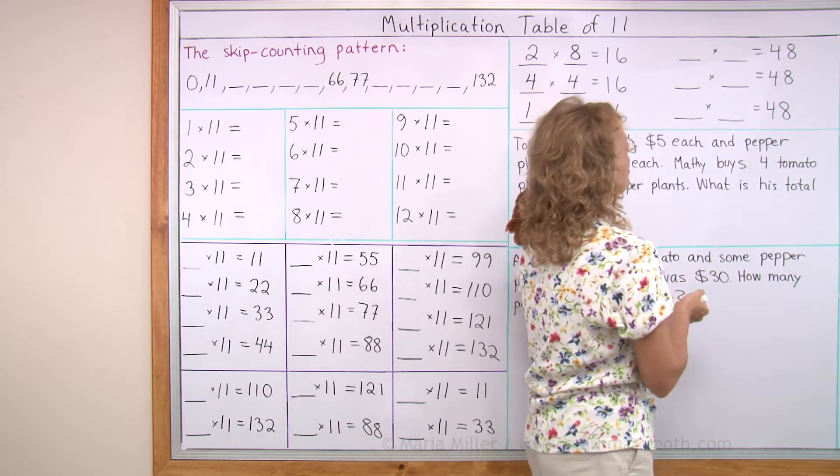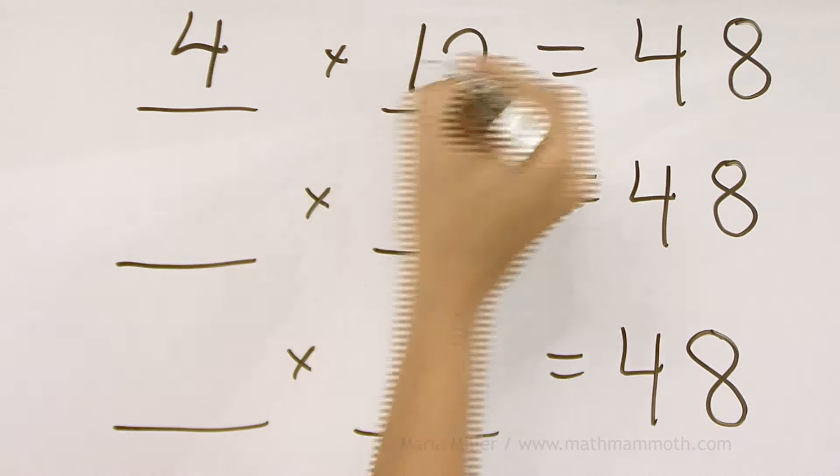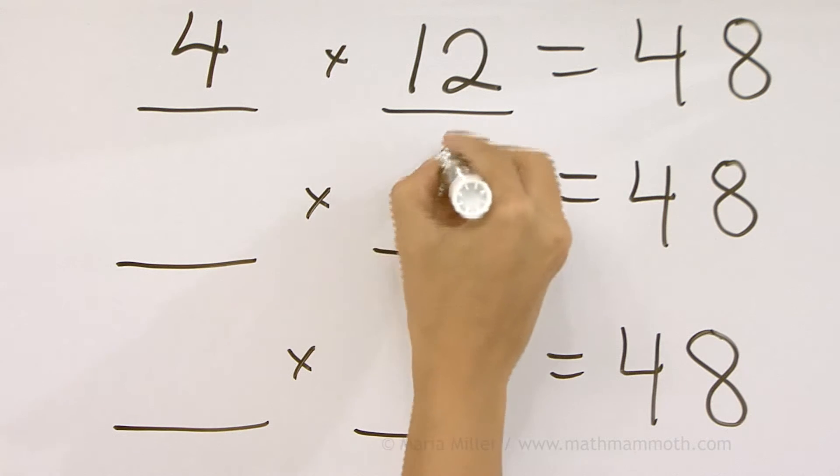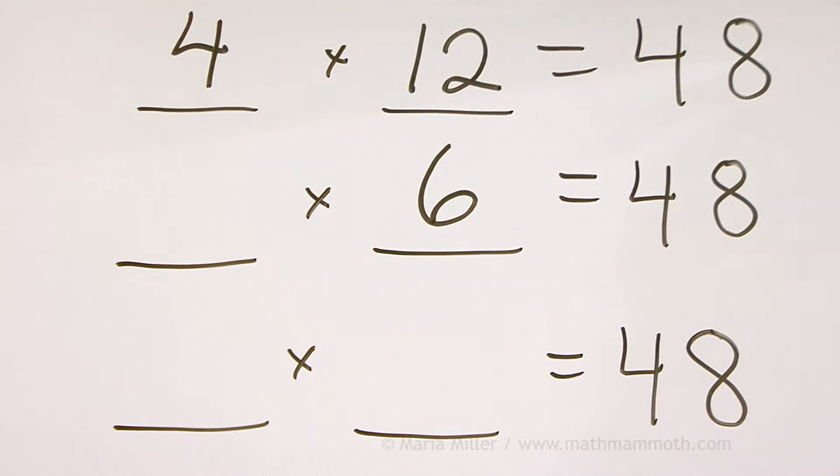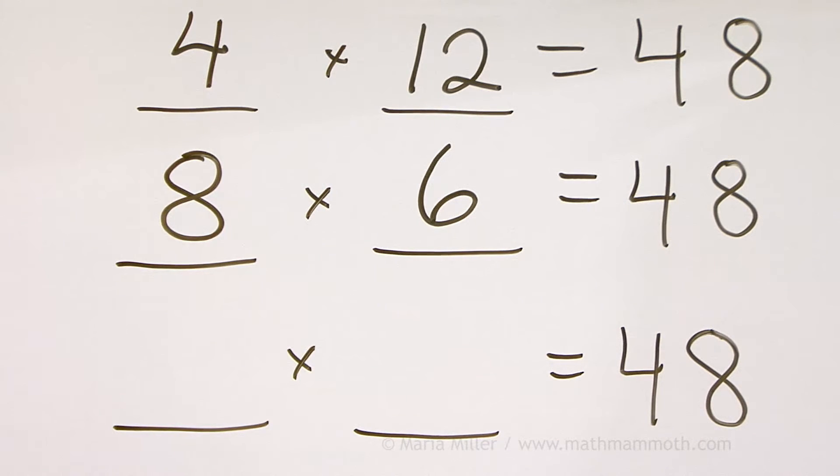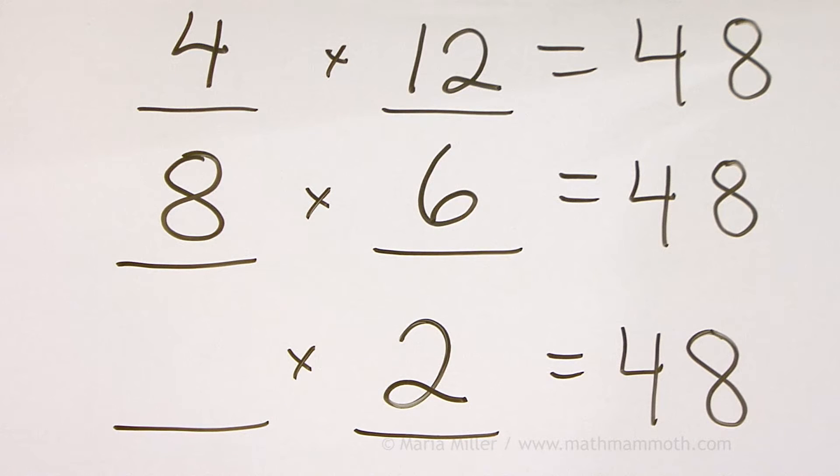It's in several ones. For example, in the table of 4. 4 times 12. It is also in the table of 6. 8 times 6. And it is an even number so we can surely write it as 2 times something. 2 times what number? 24.